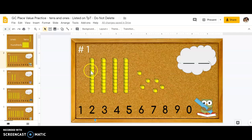So I'm going to count how many longs I have. One, two, three, four. I have four longs, so I know the four goes in the tens place value.